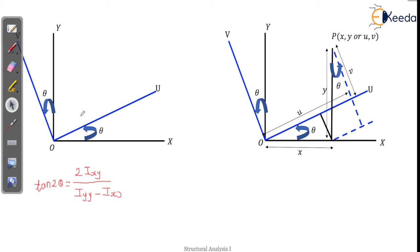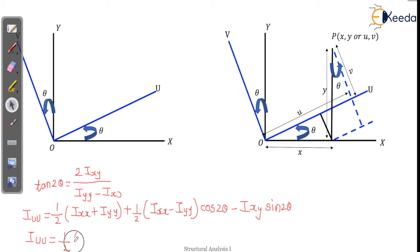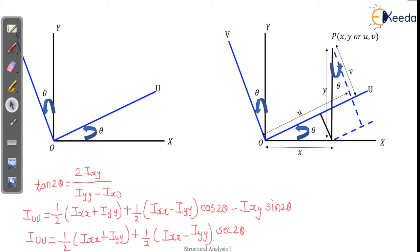The principal moment of inertia about axis OU is: IUU = (1/2)(Ixx + Iyy) + (1/2)(Ixx − Iyy)·cos 2θ − Ixy·sin 2θ. On simplifying, we get IUU = (1/2)(Ixx + Iyy) + (1/2)(Ixx − Iyy)·sec 2θ. This is the principal moment of inertia about OU.